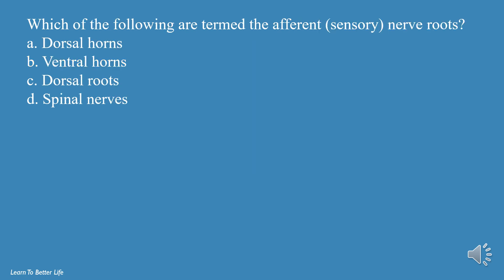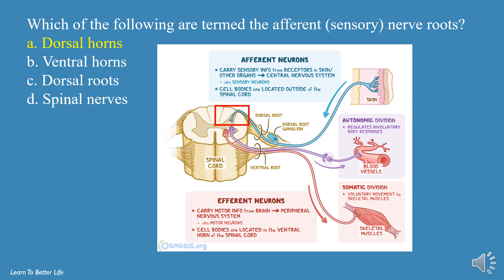Which of the following are termed the afferent, sensory nerve roots? a. Dorsal Horns, b. Ventral Horns, c. Dorsal Roots, d. Spinal Nerves. The answer is a, Dorsal Horns.